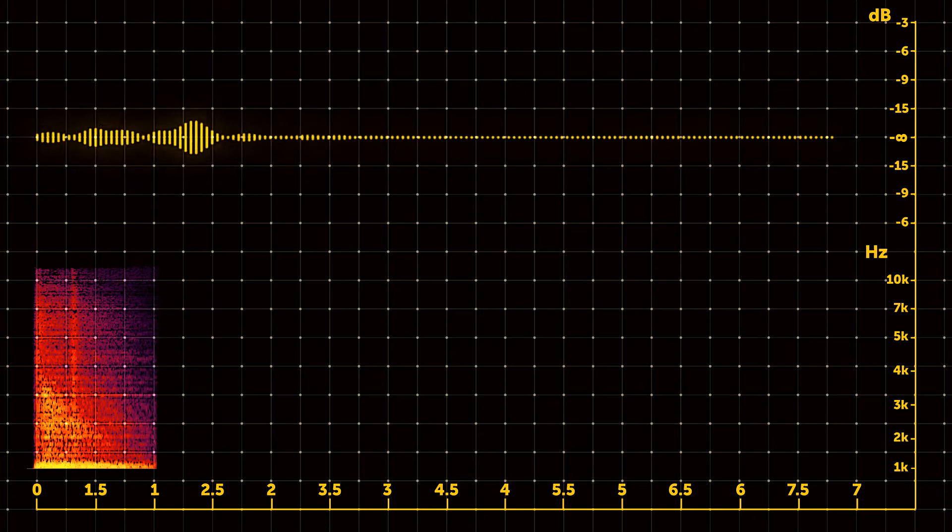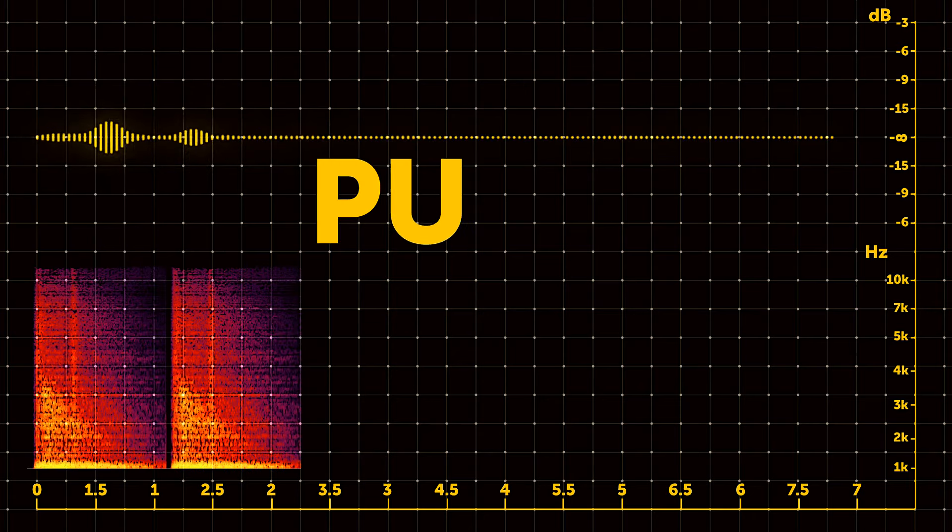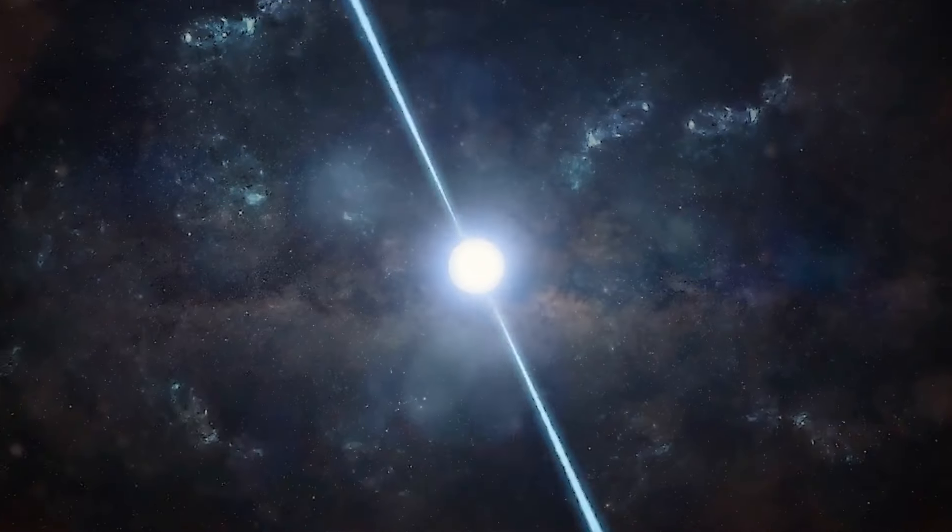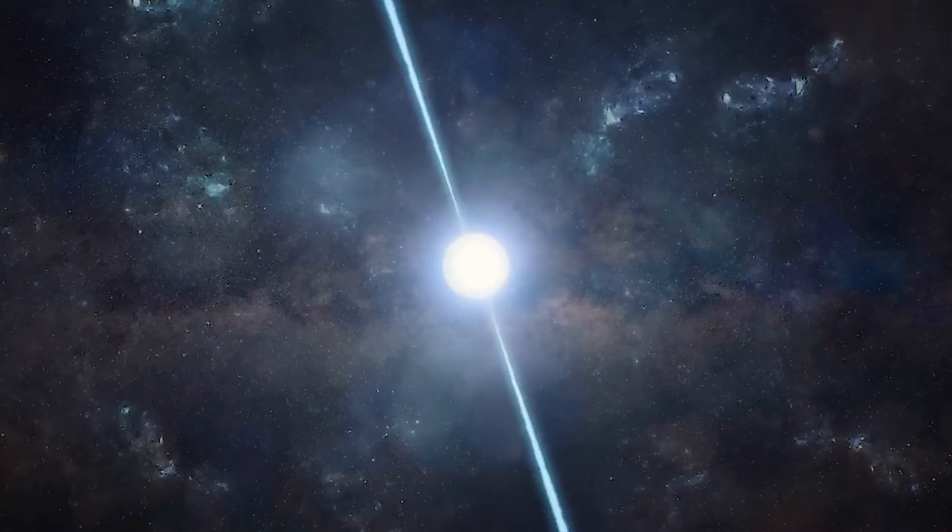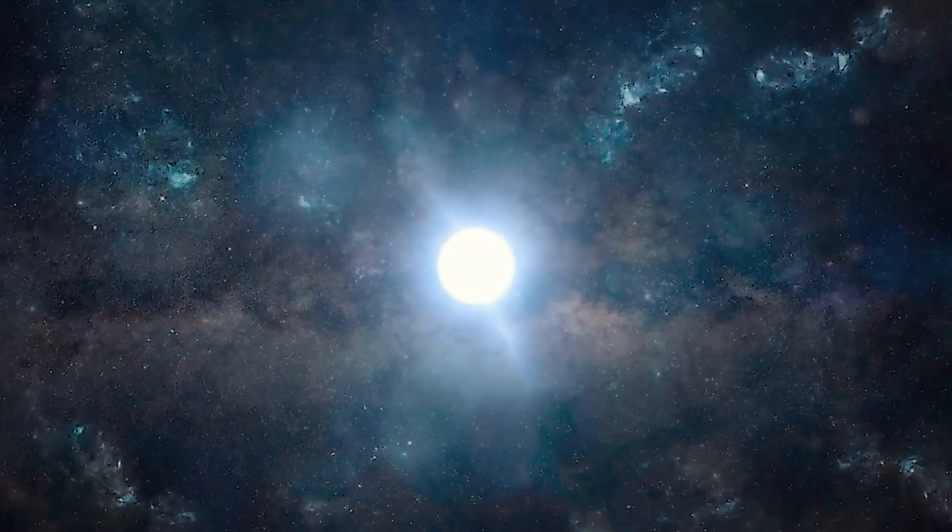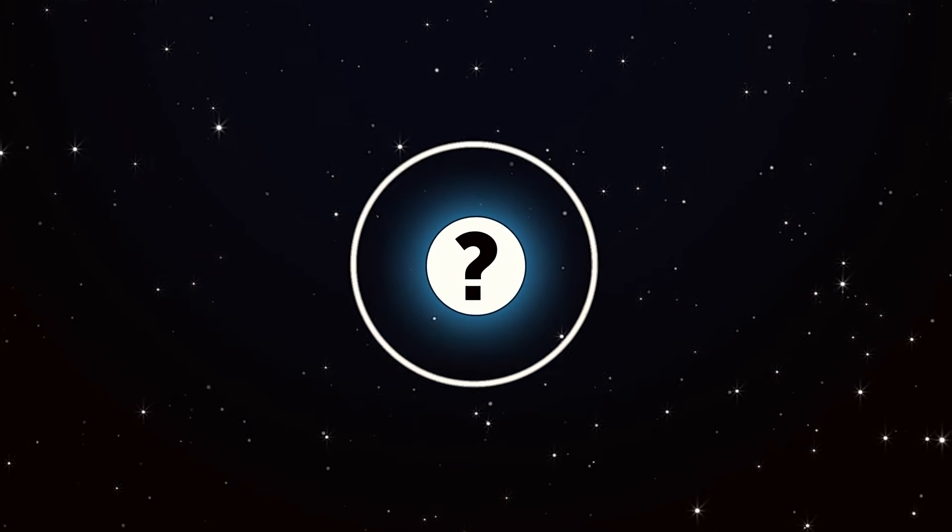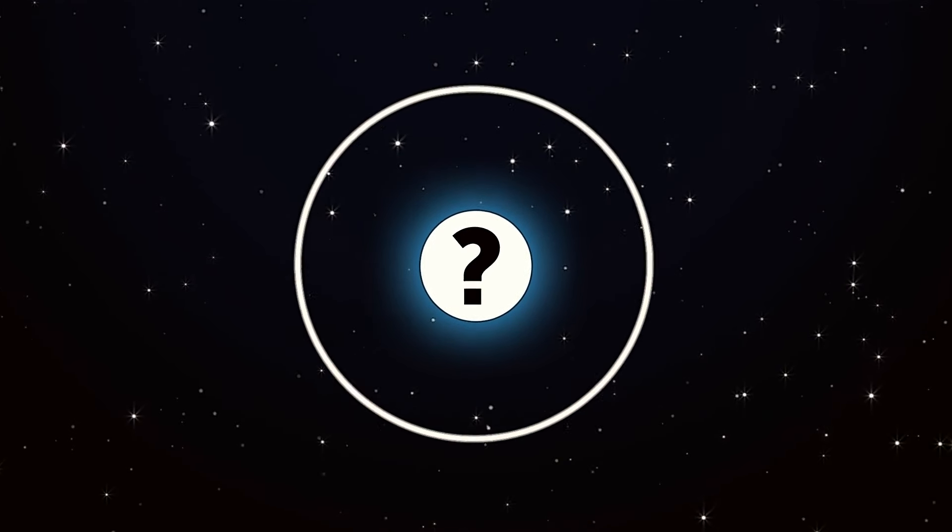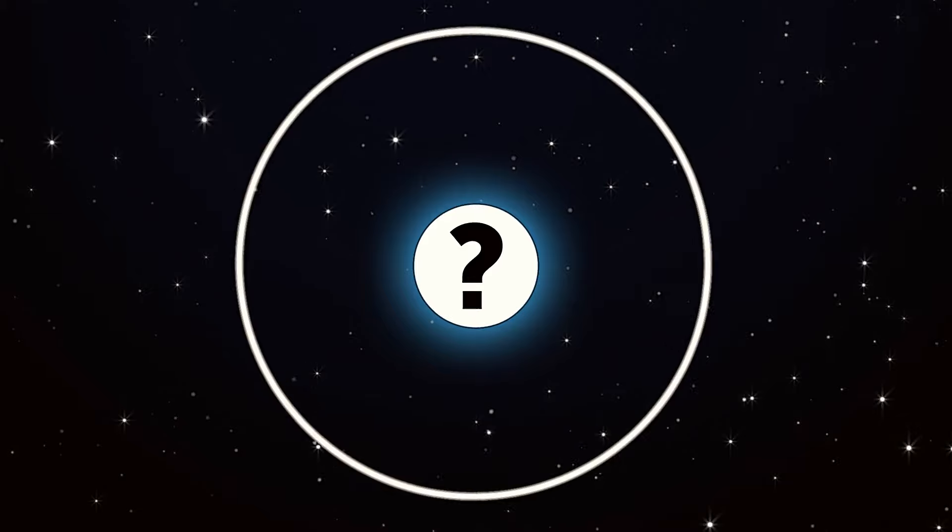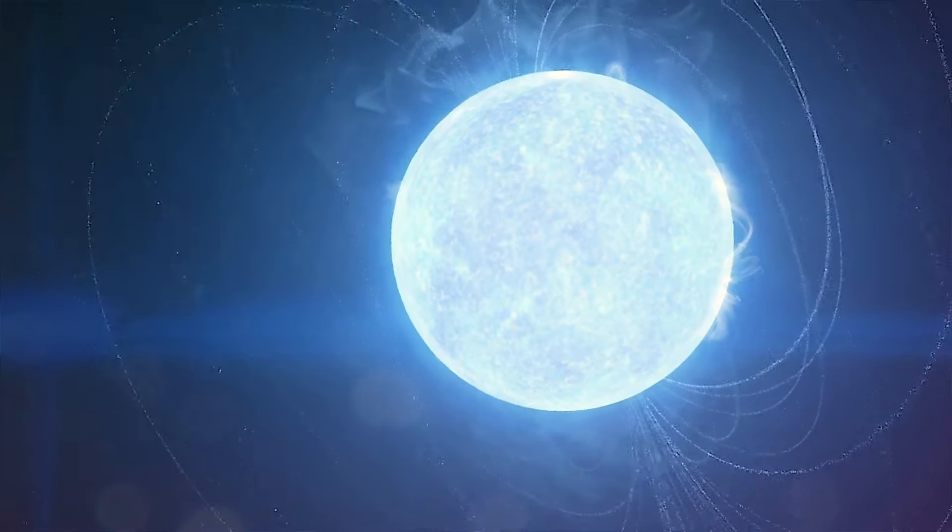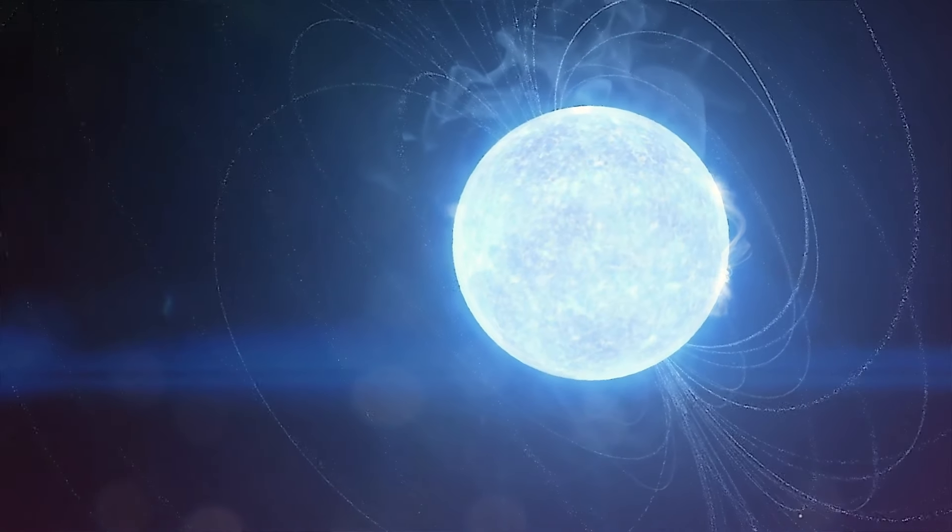Now, the strange signal we detected seems to have similarities with pulsars. But not quite. Pulsars usually have a predictable lifespan and slow down over time, eventually stopping their radio signals. In contrast, our mysterious signal is quite persistent and is blinking beyond what's expected for pulsars. So, maybe it's not a typical pulsar. Or not a pulsar at all.